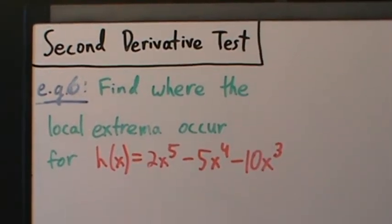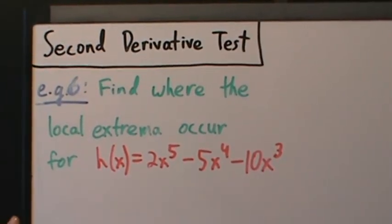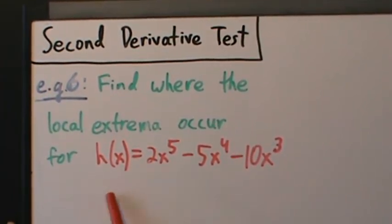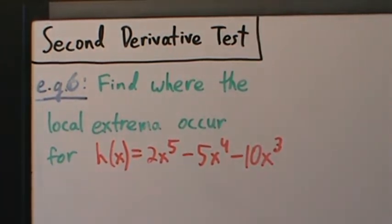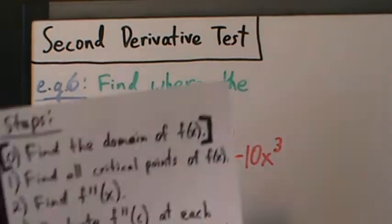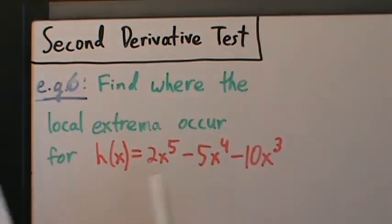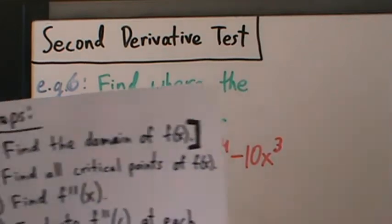Here's example six with the second derivative test, which corresponds to our example six for the first derivative test. We'll do this same function with a different test just to highlight the differences. Step zero: find the domain of h of x — it doesn't matter what we call the function, the same principles apply.